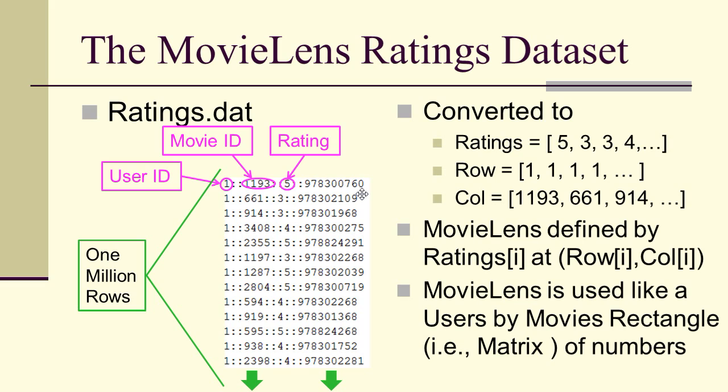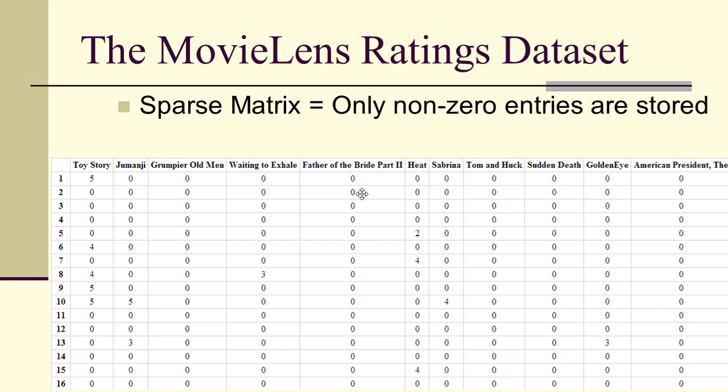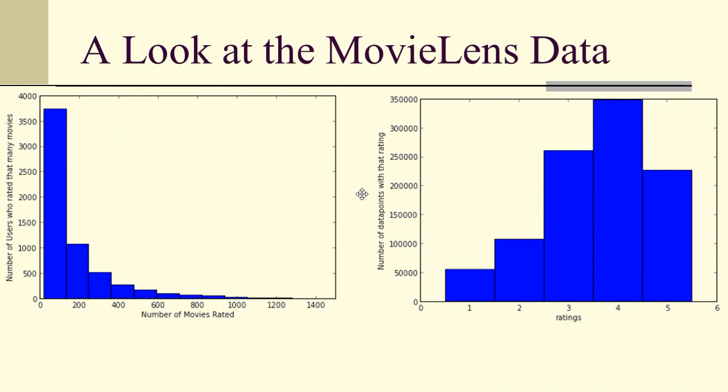We're not going to use the timestamp. We're going to convert the ratings data into a matrix where rows are user IDs and columns are movie IDs. The MovieLens data will be defined by the rating at row i, column j. It looks like a rectangle even though it actually isn't a full rectangle of data. A sparse matrix format stores only the nonzero entries — everything else is assumed zero and only included when absolutely necessary.